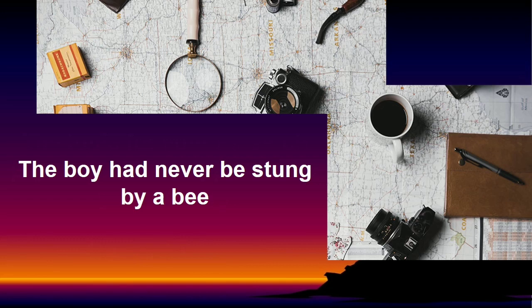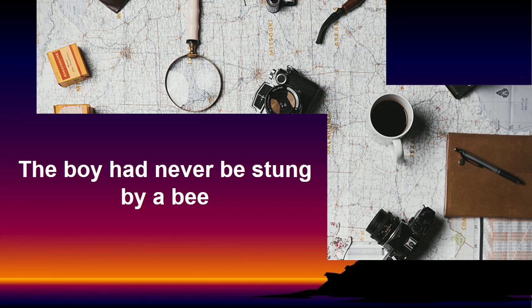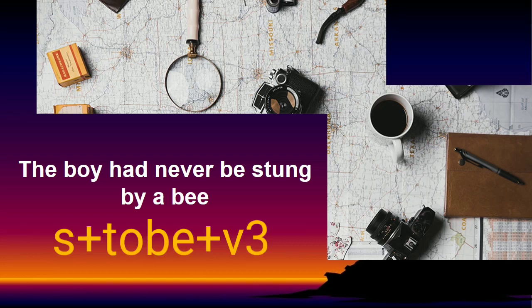The next: 'The boy had never be stung by a bee.' Let's identify. The subject is 'the boy' and the verb is 'had never be stung.' The boy is definitely stung by a bee, not stinging. So this is a passive sentence, with structure subject + to be + verb 3. What is wrong? The to be used is wrong — it should be 'been,' the to be used in perfect tense. 'Be' alone is used with modals like should, will, can, etc. Since this sentence uses 'had,' we use 'been.' Correct sentence: 'The boy had never been stung by a bee.'